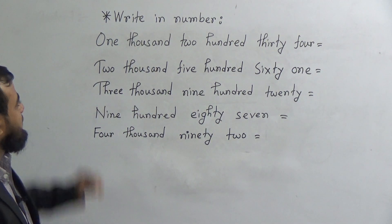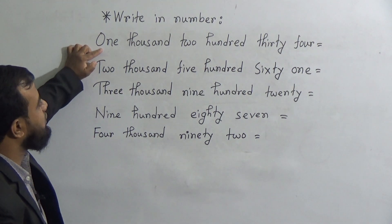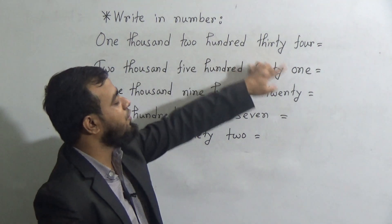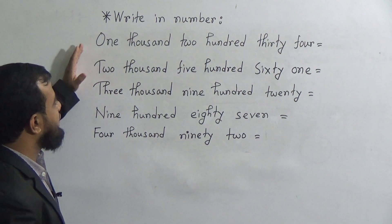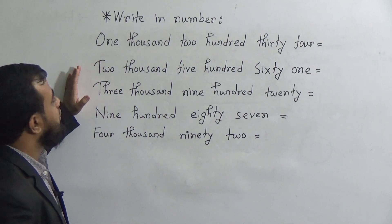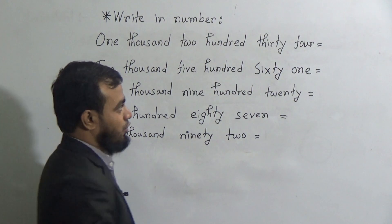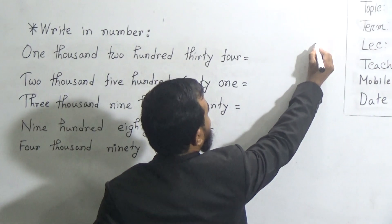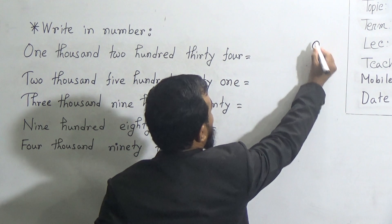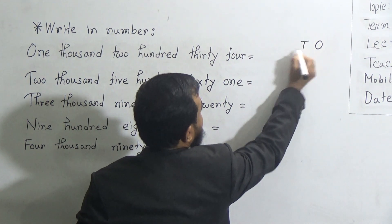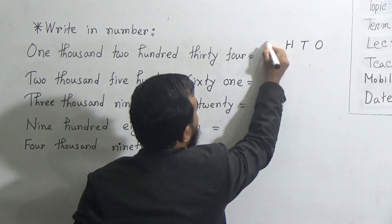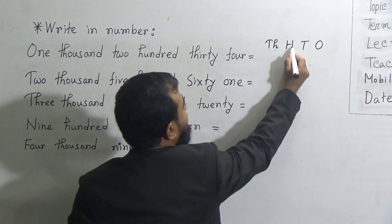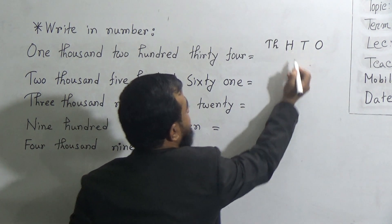The first one is 1,234. To write down these numbers, we have to know what is the place value. The place value we know already. The place values are 1, 10, 100, and 1000. We need to know only these 4 place values.